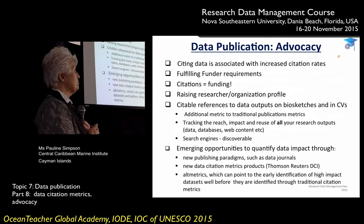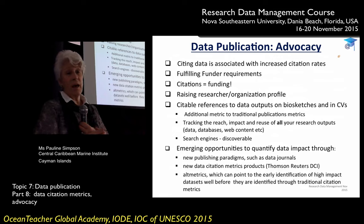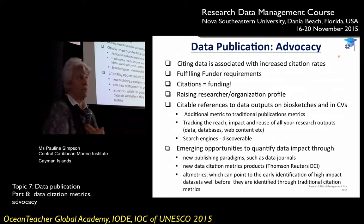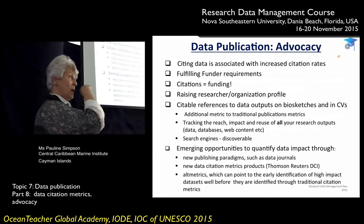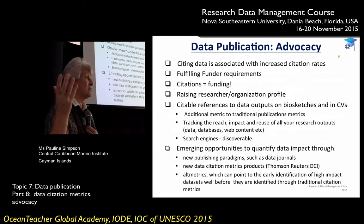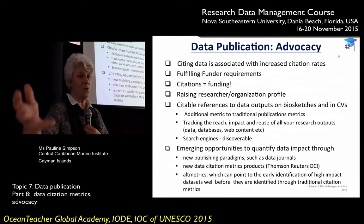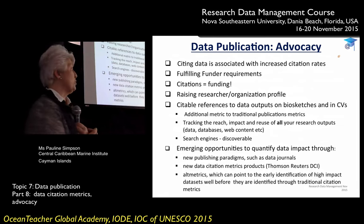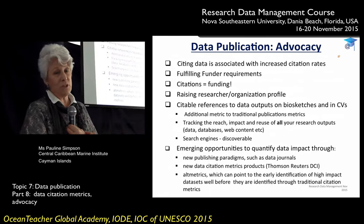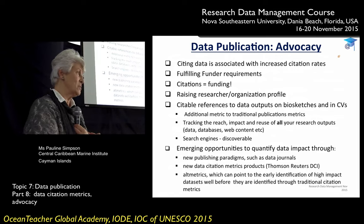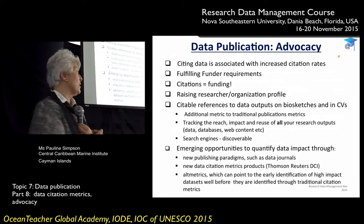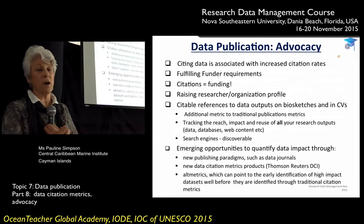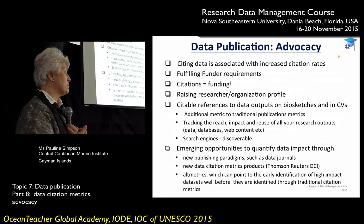Data citation will raise their own profile and their organisation's profile. Researchers can start putting citable references in their biosketches and on their CVs — these are additional to traditional outputs, representing new work and new ways. Search engines are picking up these citations, making datasets really discoverable. We now have emerging opportunities for quantifying data impact, new publishing paradigms such as data journals, and hopefully metrics products beyond just Thomson Reuters behind a subscription firewall. Altmetrics can point to early identification of high impact, even if reliability isn't yet certain.